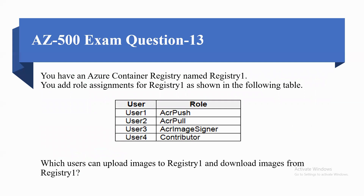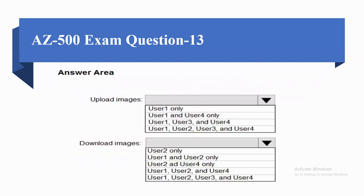Coming to the next question. You have an Azure container registry named Registry1. You add role assignments for Registry1 as shown in the following table. Which user can upload images to Registry1 and download images from Registry1? Options for upload images: User1 only; User1 and User4 only; User1, User2, and User4.